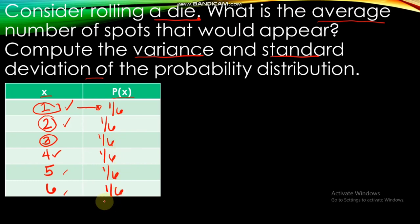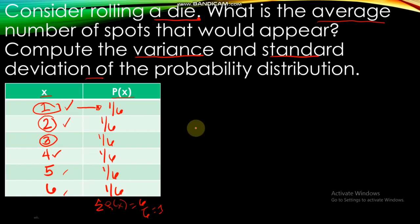The second property of a probability distribution: the sum of the probabilities of all values of the random variable must be equal to 1. The sum of this probability distribution: since all have the same denominator, we add only the numerators — 1+2+3+4+5+6 = 6, so that is 6/6 = 1. This confirms property number 2, since the sum of all probabilities equals 1.